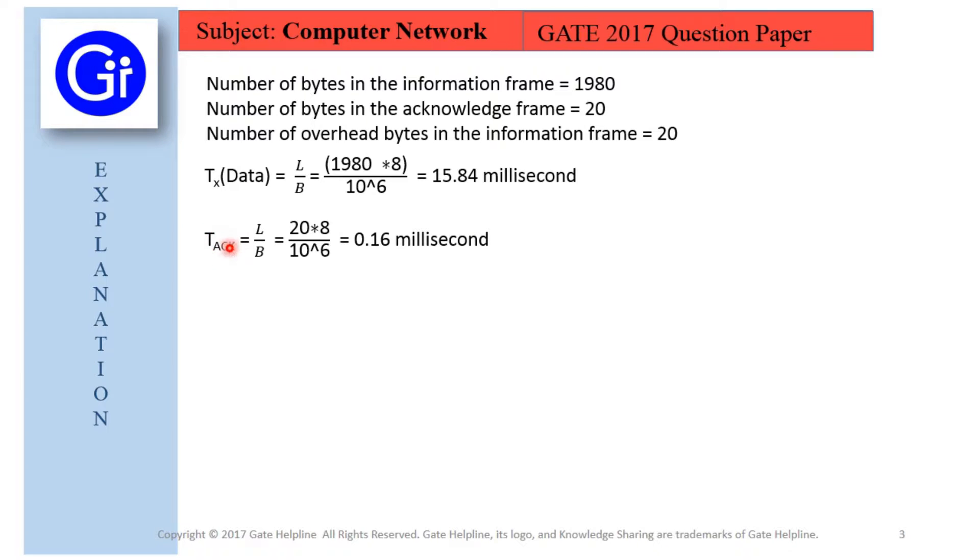Similarly, transmission time for acknowledgement is L upon B, which is 20 into 8 upon 10 raised to power 6, which evaluates to 0.16 ms. The two-way round trip time, that is RTT, equals 2 into Tp, which equals 2 into 0.75, which equals 1.5 ms. The time to process a frame is 0.25 for data plus 0.25 for acknowledgement, which equals 0.5 ms.